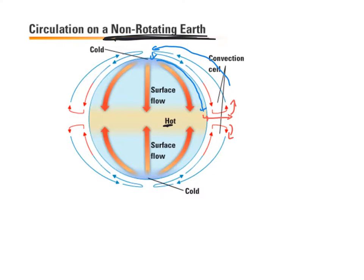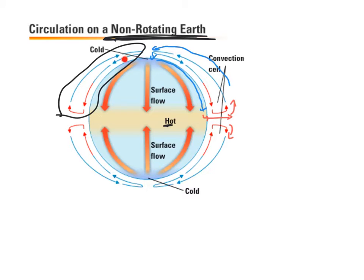We can see this cycle in our diagrams: heating of the air causes it to rise, then it spreads out and cools in the atmosphere until it gets cold enough to plummet back down. When it plummets down it spreads out, travels over the earth, warms up, and eventually gets warm enough to lift again — and that's how we see this cycle continuing.